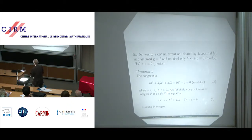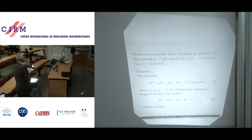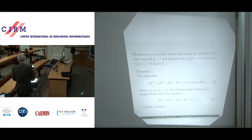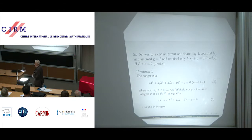Mordell was to a certain extent anticipated by Jakob Stahl, who assumed G equal to F and required only FX plus C congruent to 0 mod Y, and FY plus C congruent to 0 mod X. Jakob Stahl's paper appeared in Compositio Mathematica in 1939, probably just before the war. The Second World War broke out and the paper was completely ignored by further writers on the topic, which given the war I do not find strange.